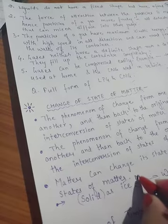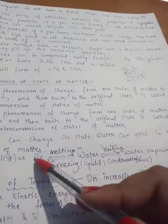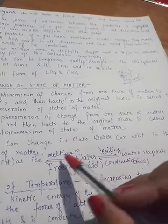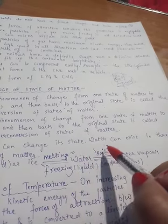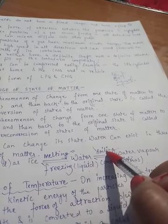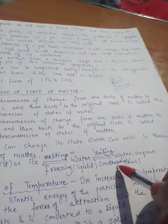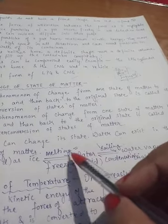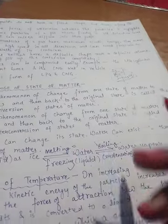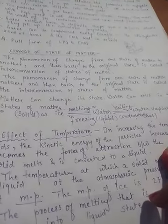When a solid melts to liquid state, it is called melting. When liquid water is heated further, it vaporizes to water vapors. When water vapors are cooled, it is called condensation, and when water reduces to ice, it is called freezing. So this is interconversion — we call it change of state of matter.